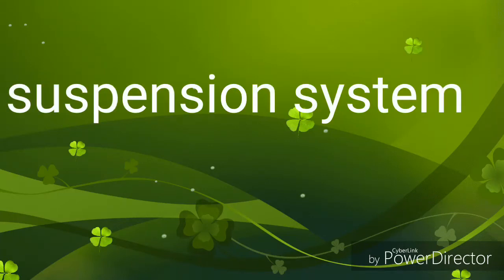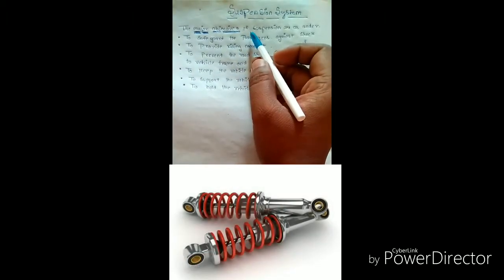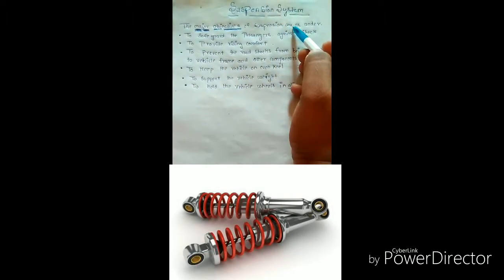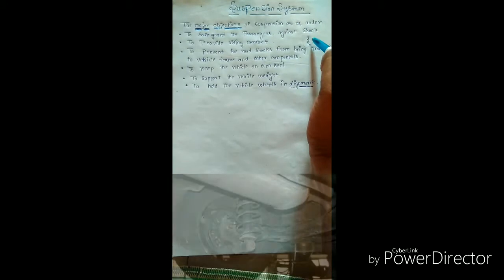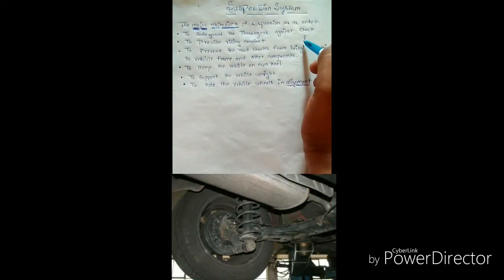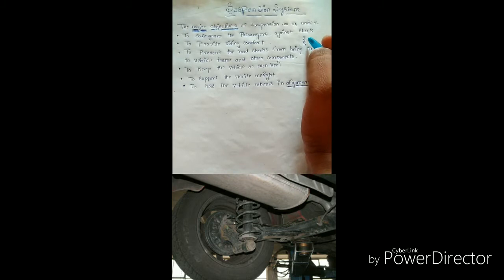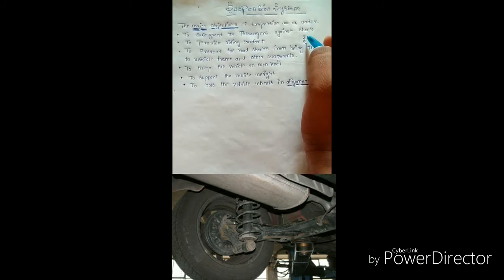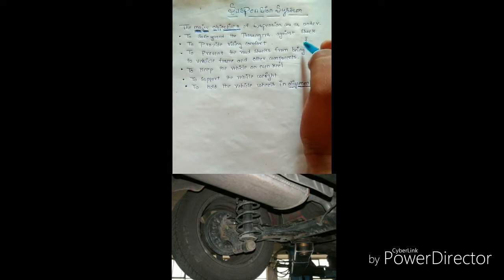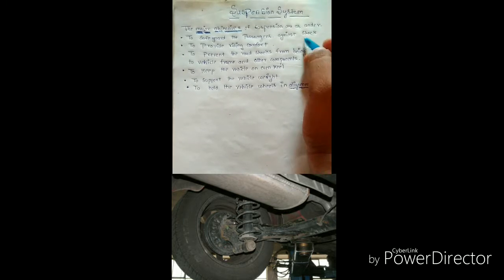Hello guys, today we will be studying about the suspension systems and the major objectives of the suspension system. The major objective of the suspension system — as we know, the suspension system is used to absorb the shocks and vibrations which are coming on the vehicle when it is in running condition or static condition. There are various loads acting on the chassis or frame, and all are damped by the suspension system.